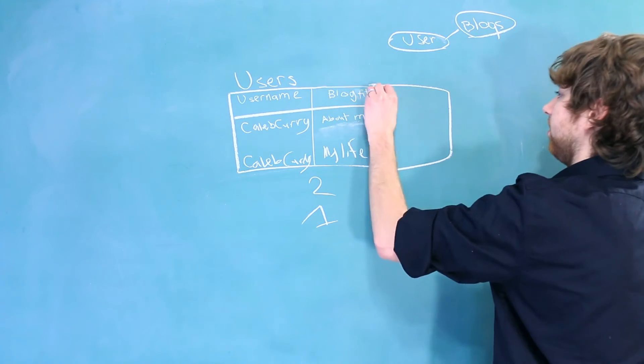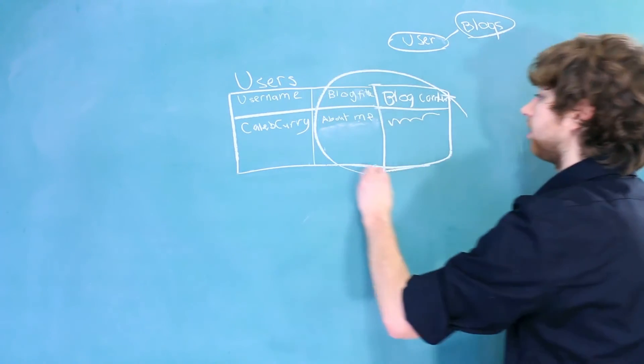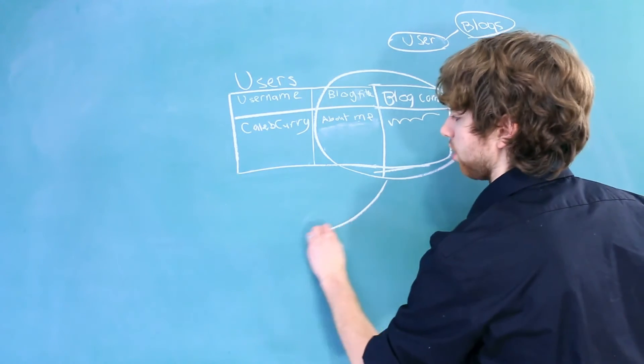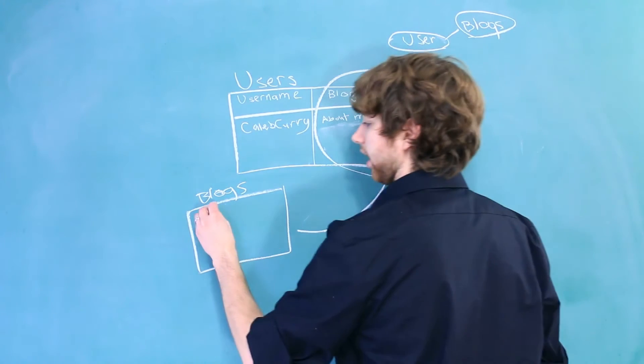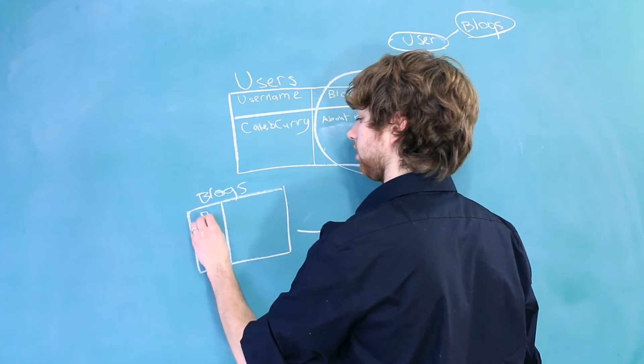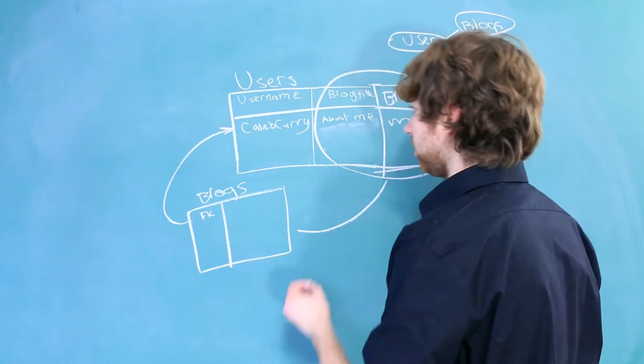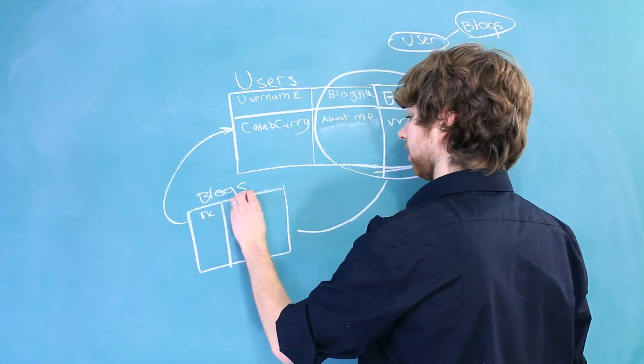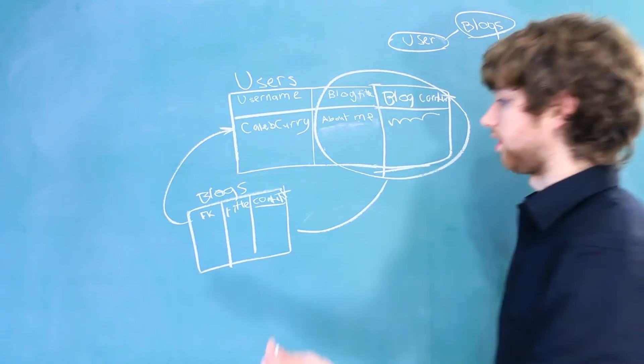And what we need to do is we need to take this blog and separate it out to its own table and name it blogs. Now in this situation, we would have a reference to the user, which in this case we could have a foreign key to the username, or we could use an ID if you wanted. And then we would have a column for the title and a column for the content. And that would work just fine.